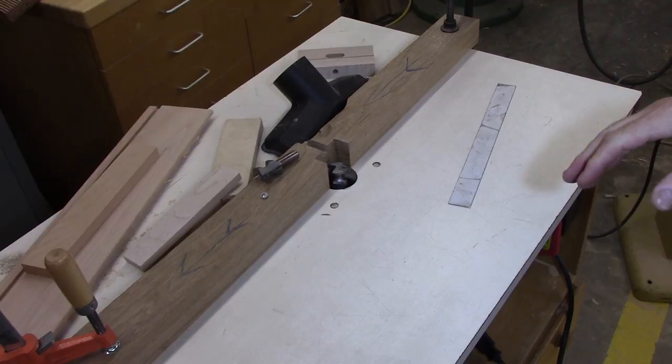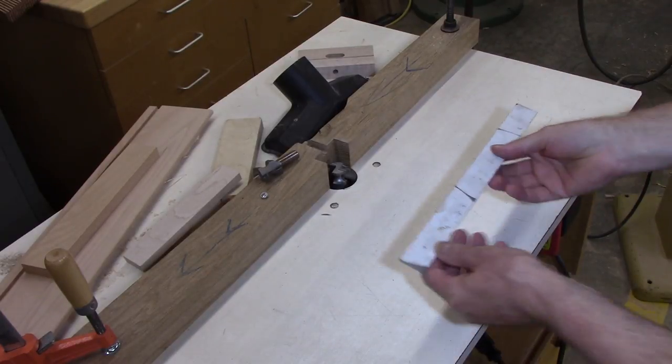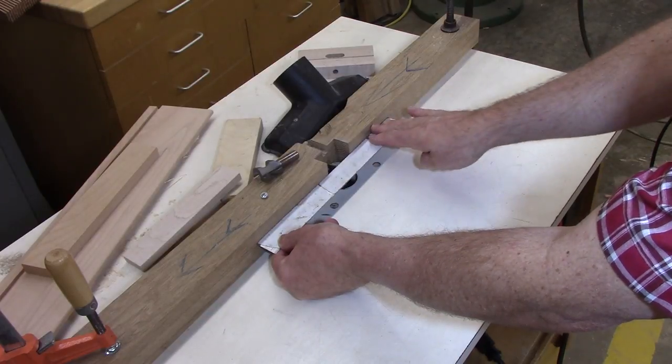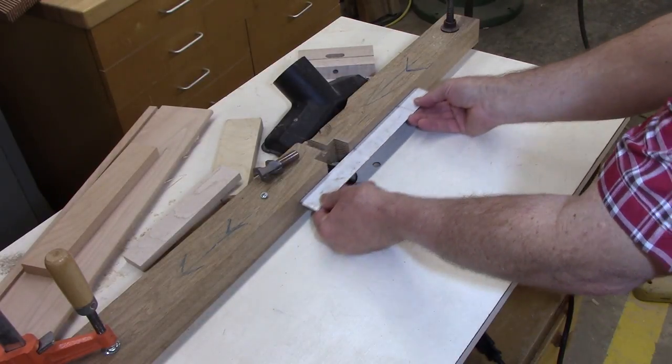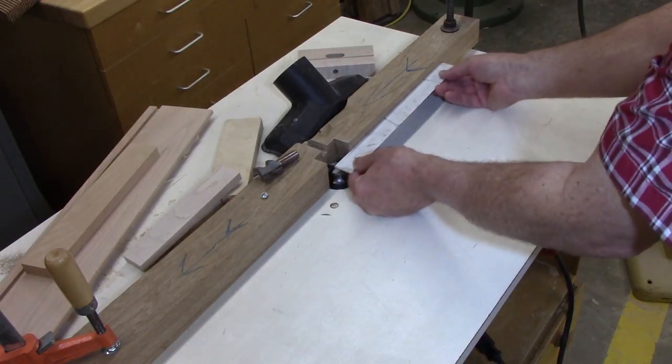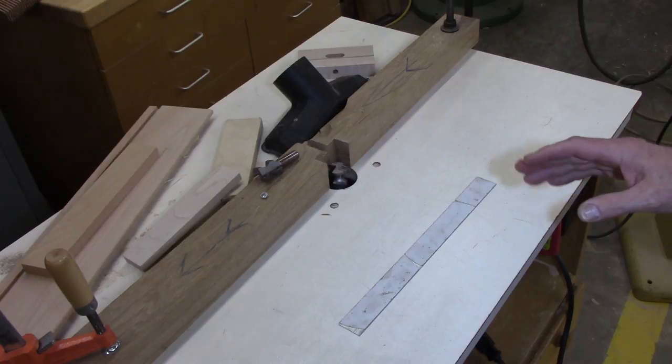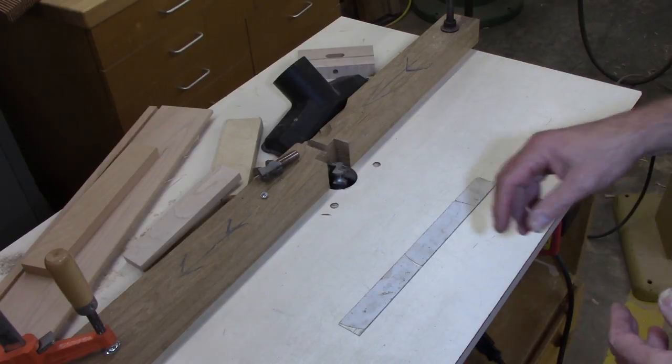The key to fitting the bar is the setup. Now we have an offset fence here, meaning that this infeed side is about a sixty-fourth of an inch behind the outfeed. So we're doing a full profile here, taking off the complete edge.